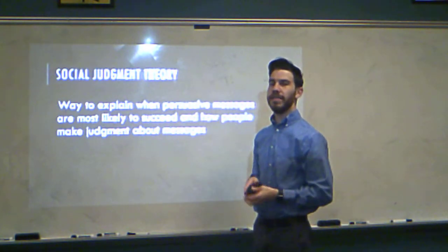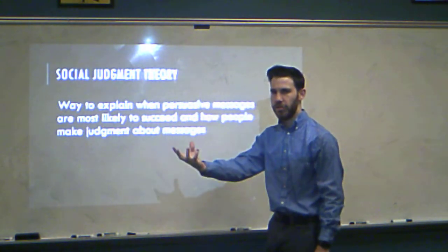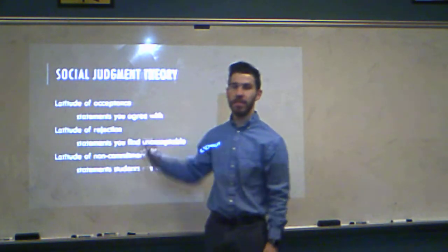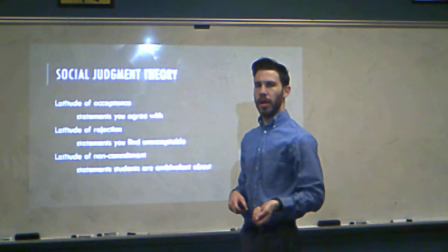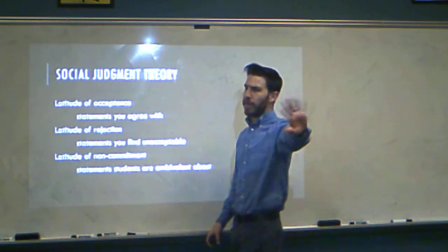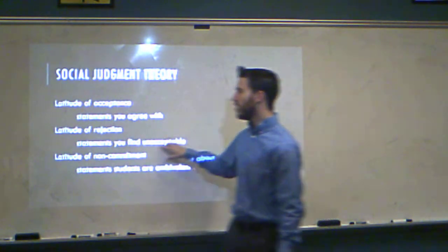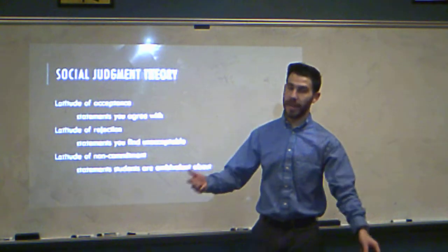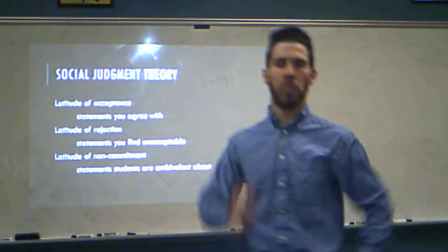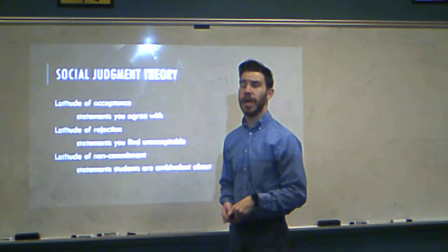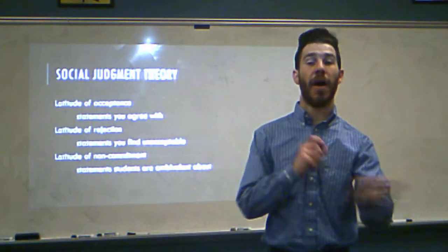Now there's one last thing we're going to talk about: the social judgment theory. This is the way that people judge a message. There are three different aspects. The latitude of acceptance - they accept it, they believe it. The latitude of rejection - they disagree with it. And the non-commitment - they really don't care. Which one do you think is hardest? If you said rejection, you're actually incorrect. Rejection is the second hardest. Those in rejection will at least sit with you and discuss why they think you're wrong - they'll have a debate.